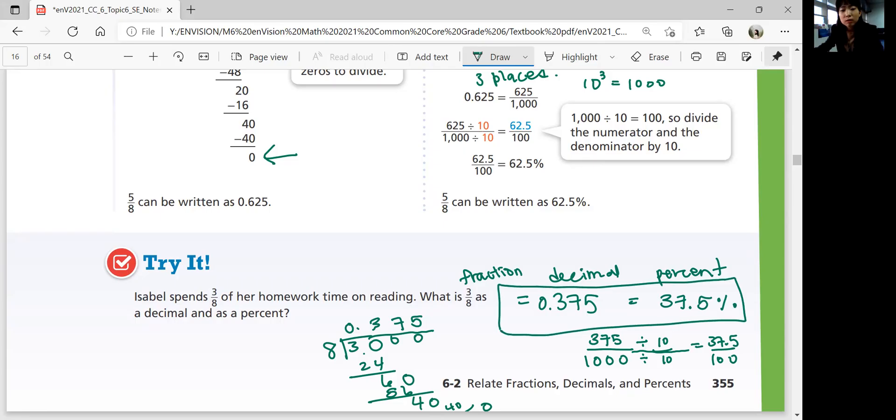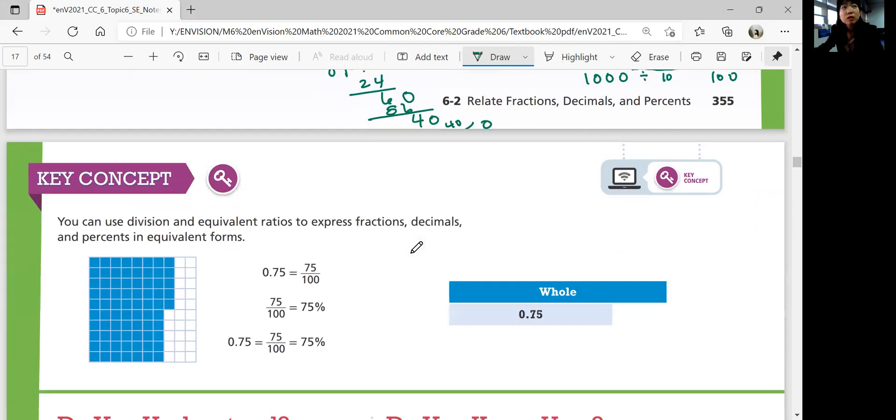All right. So that was our lesson. To summarize, you can use division and equivalent ratios to express fractions, decimals, and percents in equivalent forms. So keep in mind how to convert between fractions, decimals, and percents. We're going to continue learning about percentages in the next lesson where we represent percents greater than 100 or less than 1. All right. If you have any more questions, make sure you ask Miss Kang in class. See you in the next video. Bye.